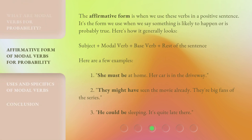The affirmative form is when we use these verbs in a positive sentence. It's the form we use when we say something is likely to happen or is probably true. Here's how it generally looks: Subject + modal verb + base verb + rest of the sentence. Here are a few examples.